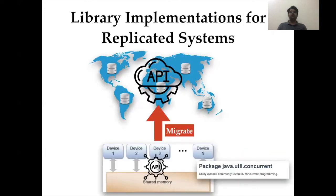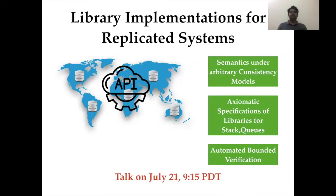Having library implementations for common data structures can be very useful in simplifying programming for replicated systems. In this paper, we consider the problem of migrating library implementations from shared memory systems to replicated systems. Unfortunately, these carefully crafted implementations, which have been verified to be correct in shared memory systems, fail in a number of ways when migrated to replicated systems. Therefore, we propose for the first time appropriate semantics for such library implementations under arbitrary consistency models, new specifications for libraries such as stacks and queues specially designed for replicated systems, and an automated bounded verification framework. For more details, please join our talk on July 21st.